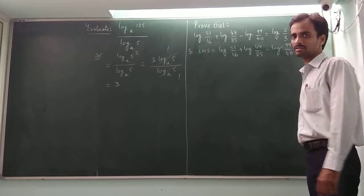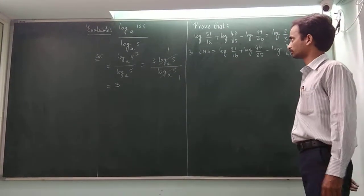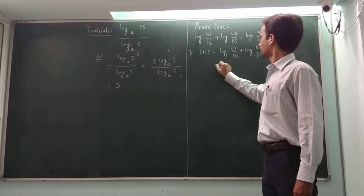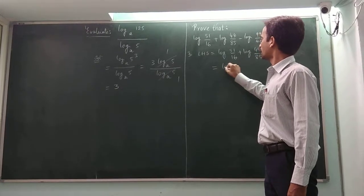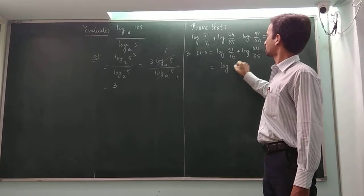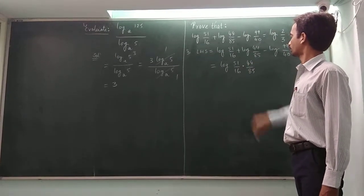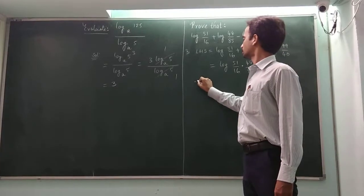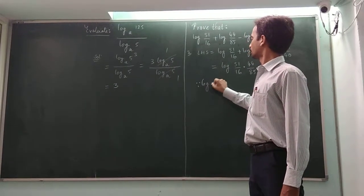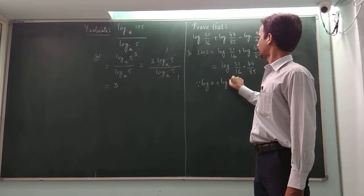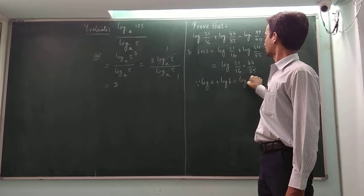The first two terms are in the form of log A plus log B. Log A plus log B is log A into B. So we can write it as log 51 by 16 into 44 by 85. So log A plus log B is equal to log AB.